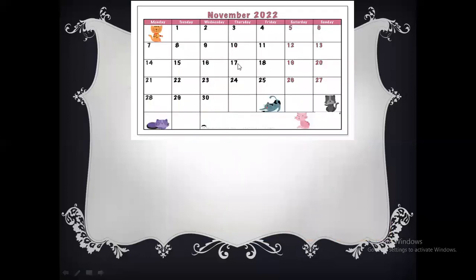Now we are going to look at a page showing the month of November 2022. Here you can see Monday, Tuesday, Wednesday, Thursday, Friday, Saturday, and Sunday. There are seven days in a week and the month starts with date one. Some months have 30 days and some have 31 days.